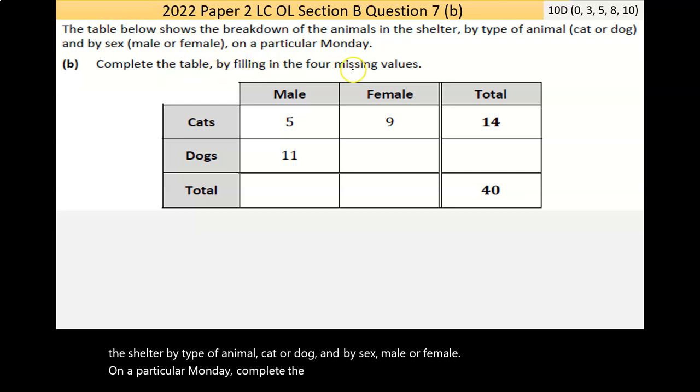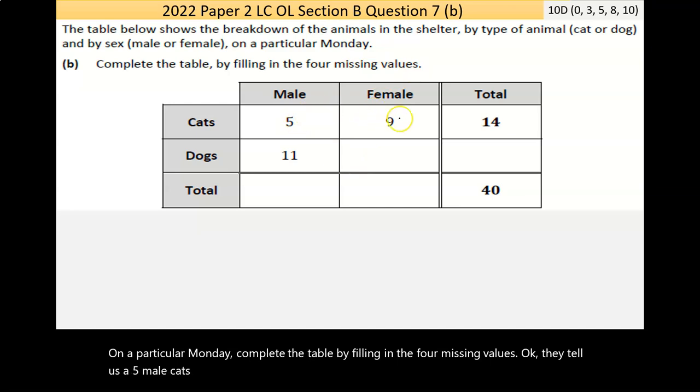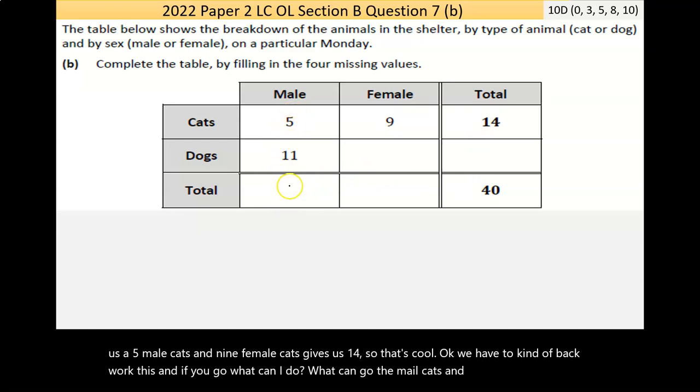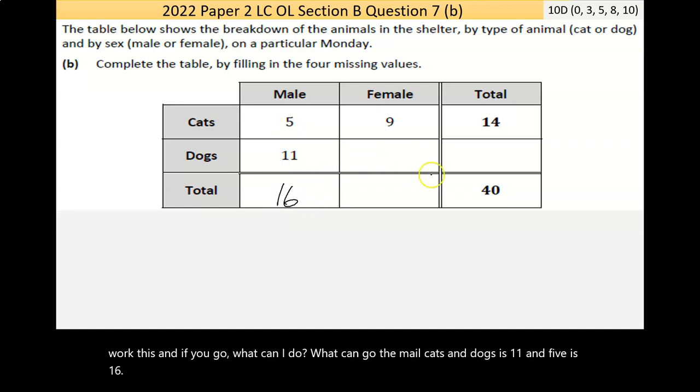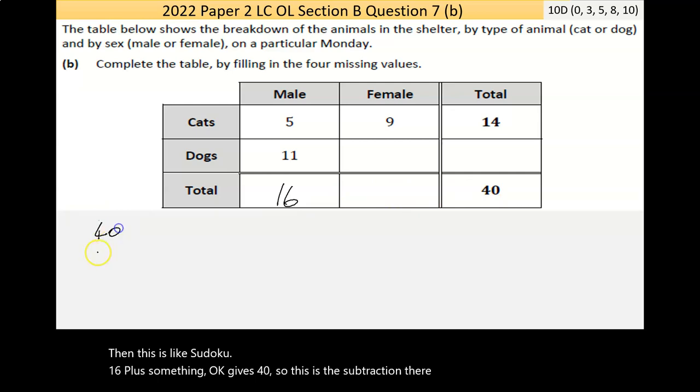Complete the table by filling in the four missing values. They tell us that five male cats and nine female cats gives us 14, so that's cool. We have to kind of backwork this. And if you go, what can I do? We can go, the male cats and dogs is 11 and 5 is 16. Then, this is like Sudoku. 16 plus something gives 40. So there's a subtraction there. So 40 take away the 16. I should show my calculation. I should do the calculator, but whatever.